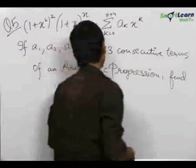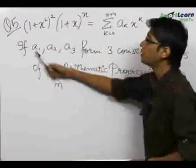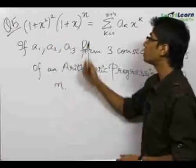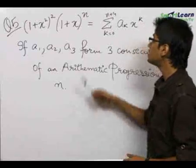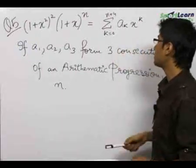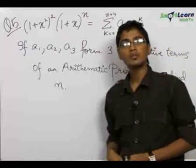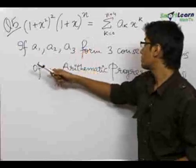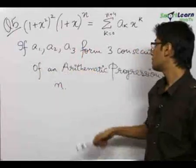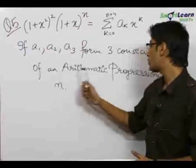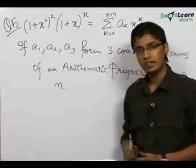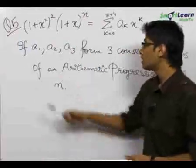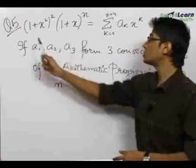The next question is: we are given the expression (1 + x²)² · (1 + x)^n equals the summation of aₖ · xᵏ, where k ranges from 0 to n + 4. We are also given that a1, a2, and a3 form three consecutive terms of an arithmetic progression. We need to find the value of n for this condition to be satisfied.